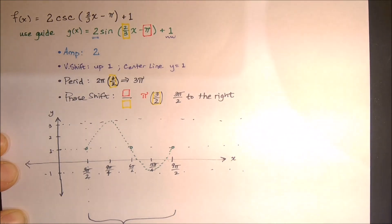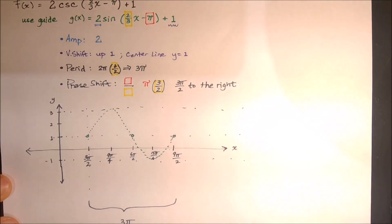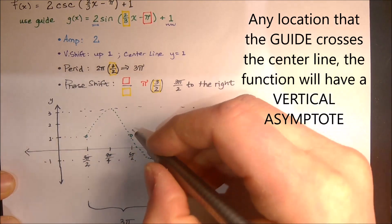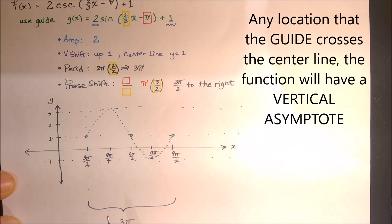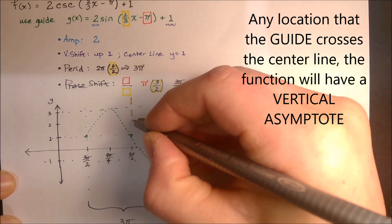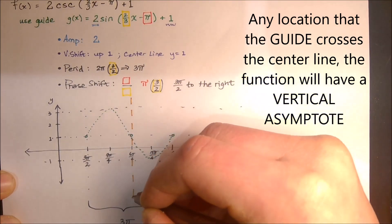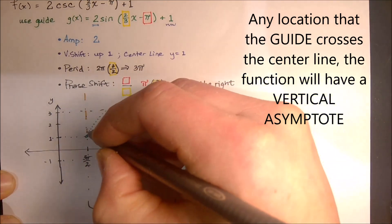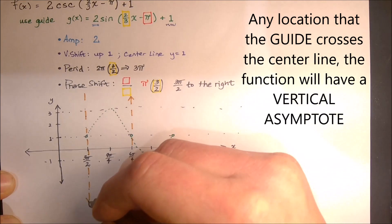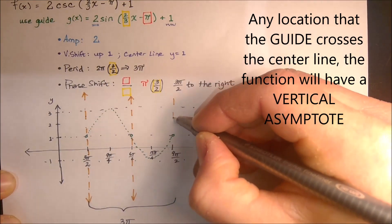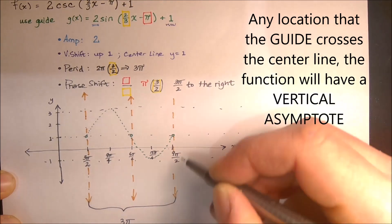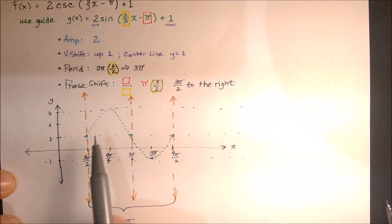This is all the transformations of our guide function, and now if we're going to actually graph our function, we're going to try to graph, 2 cosecant of 2 thirds x minus pi plus 1. The big push here is that any time the sine is 0, the reciprocal of that is undefined. So I'm actually going to put vertical asymptotes, vertical asymptotes right there, because if sine is 0, the reciprocal of 0 is undefined. You're taking 0 and forcing it into the denominator, which we all know is an undefined value.